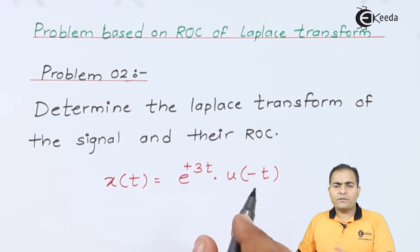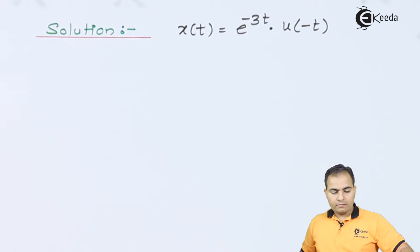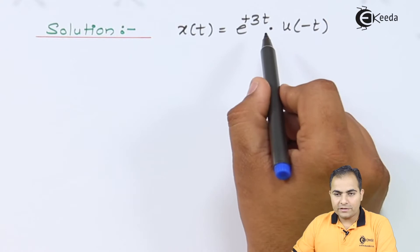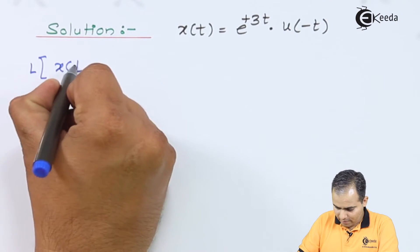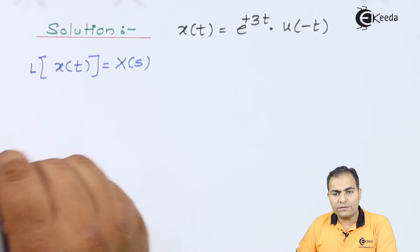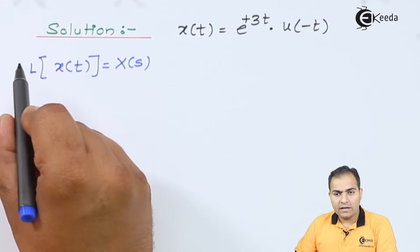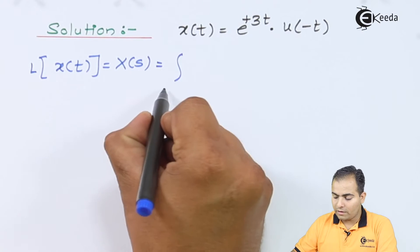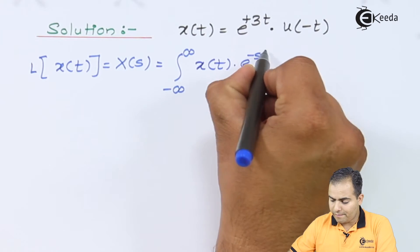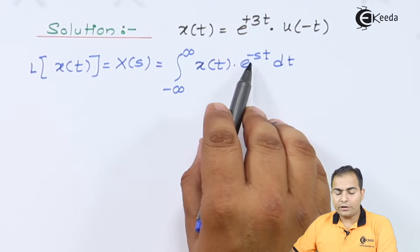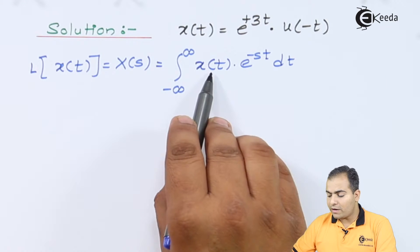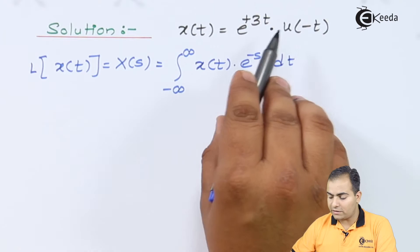Let's see the location of the ROC and the pole value of this function. Solution: x(t) = e^(+3t) · u(-t). This is my function. According to the definition of the Laplace transform, any continuous time signal can be transformed into the Laplace domain and represented by X(s). So the time signal x(t) after applying the Laplace transform becomes X(s). By definition, X(s) = integral from minus infinity to infinity of x(t) · e^(-st) dt. My x(t) is e^(+3t) · u(-t); I will substitute this value.